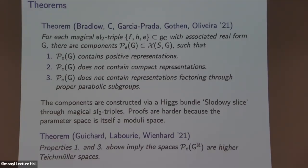The crucial thing about the higher Teichmüller spaces is positivity. The way we prove the components contain positive representations is: we have this SL₂ focus — like Teichmüller space inside the character variety — and for those points you can see they satisfy the positivity condition. That's one point, it's open, and the positivity is then verified.